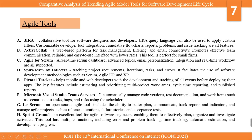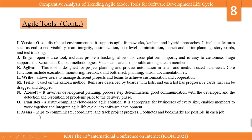Scrum is an open source agile tool. Sprint Ground is an excellent tool for agile software engineers. VersionOne supports distributed environments, allowing teams to work in agile from remote areas. Tiger is an open source tool. Agilion is a tool for project planning and process automation in small and medium-sized businesses, allowing management of different projects and teams. Trello describes items by boards, suites, and lists. Exosoft involves development planning, process step determination, good communication, and detection and resolution of problems prior to delivery. Planbox is a Scrum-based cloud agile solution. Asana helps to communicate, coordinate, and track project progress.